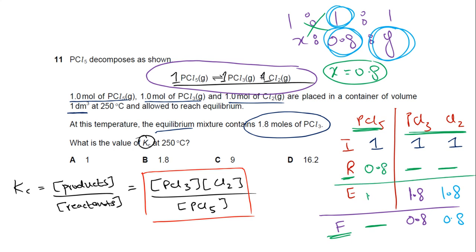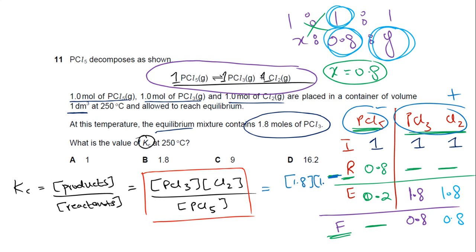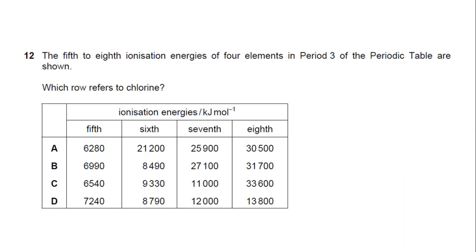For reactants we subtract, for products we add — because reactants react and products are formed. So PCl5 at equilibrium is 1 − 0.8 = 0.2 mol/dm³. Plugging into the Kc expression: (1.8 × 1.8) / 0.2 = 16.2. The answer is D.